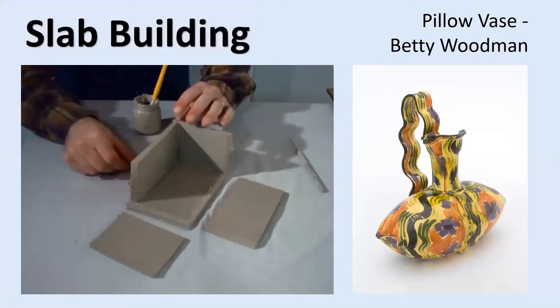The second technique is slab building — that's where you roll out sections of clay, let them dry a bit so they're stronger, then score them with cross-hatching, wet them to create a clay glue, and join them together. This person on the left is making a box, which is a nice straightforward thing to make with slabs. Slabs can get to huge sizes and quite complicated engineering-type structures. Here's a nice piece on the right by Betty Woodman, who we'll look at later — it's called Pillow Vase, made using just slabs. You're not limited to square things; you can make quite organic shapes.